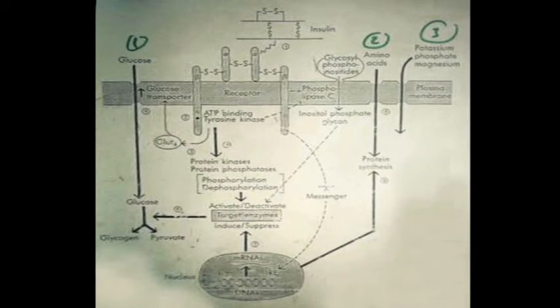Also, insulin produces other, if you remember, two second messengers: inositol triphosphate and diacylglycerol. Most probably that these two second messengers play a role in the entry of amino acids. I will add these minerals: potassium, phosphate, and magnesium. And from this figure, you can understand the role of insulin in growth. You remember we said that growth hormone and insulin work synergistically to cause the growth.